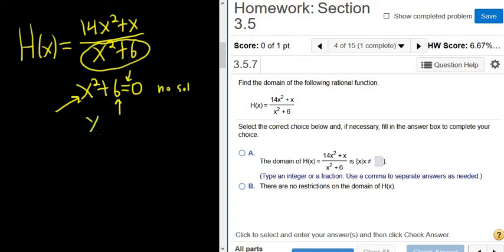Another way is if you subtract 6, you would get this. And then when you take the square root, you end up with x equals plus or minus i square root 6.